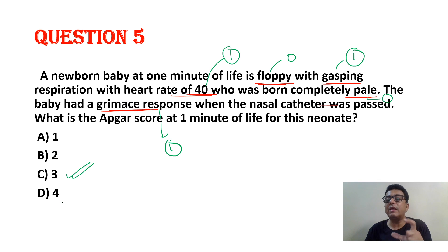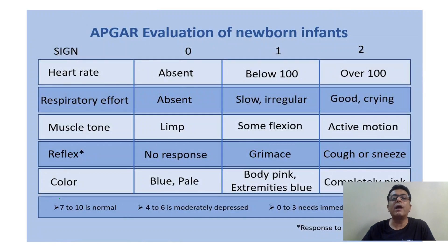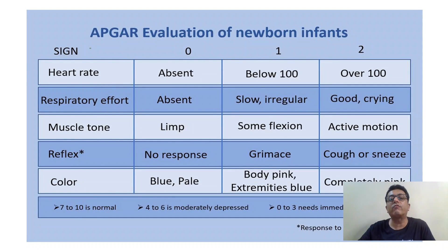You can reach this answer only if you remember each and every parameter of APGAR with its scoring. Heart rate: absent = 0, below 100 = 1, over 100 = 2. Respiration: no effort/absent = 0, irregular/gasping = 1, crying = 2.